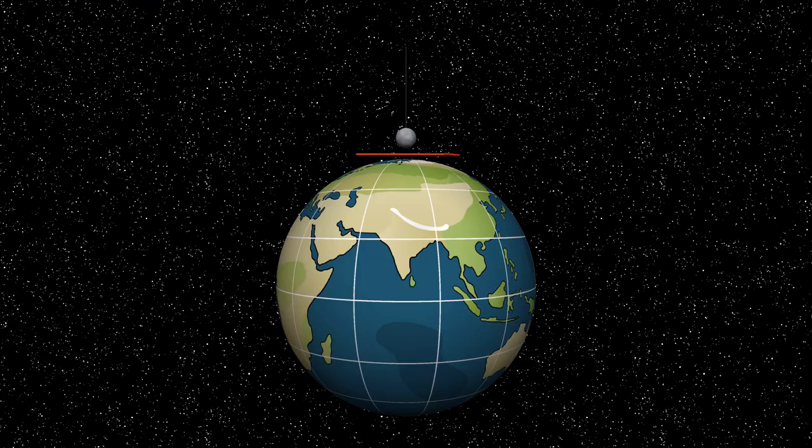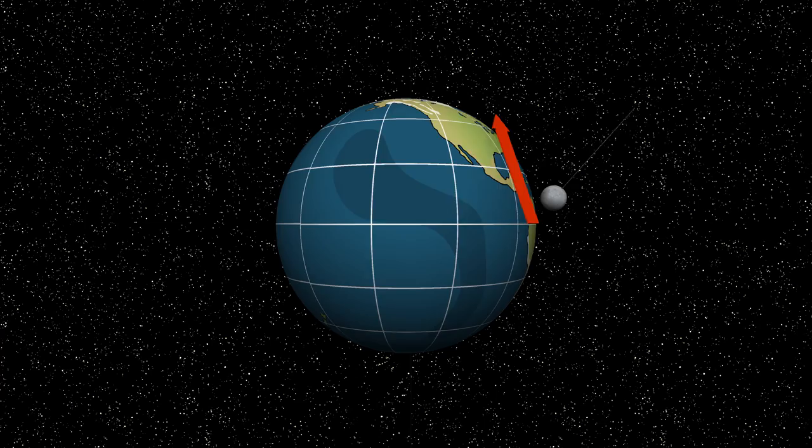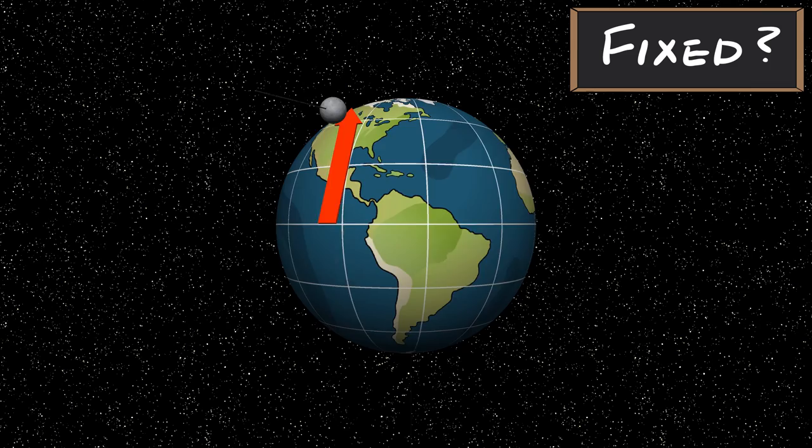But what happens when we move the pendulum away from the poles? We know we need to keep the pendulum fixed just as we did before at the poles. But unlike when the pendulum was at the poles, it's now being flung around Earth's axis. So it's a bit unclear what fixed looks like in this context.